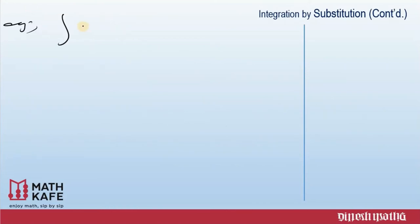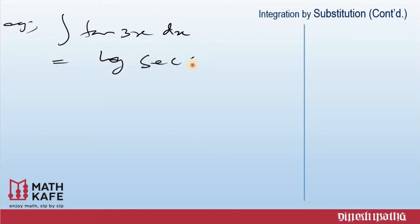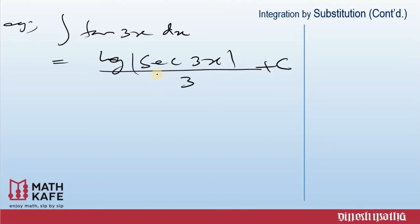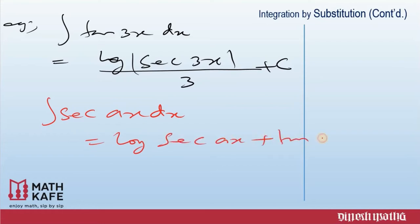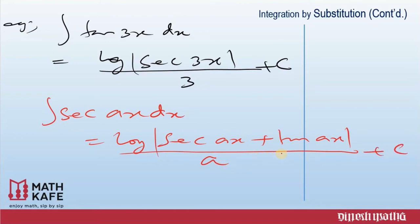For simple examples: the integral of tan(3x) dx = log|sec(3x)| / 3 + c, since the coefficient of x is 3, not 1, so we divide by 3. Similarly, the integral of sec(ax) dx = log|sec(ax) + tan(ax)| / a + c. Whenever the coefficient of x is not 1, always divide by that coefficient.